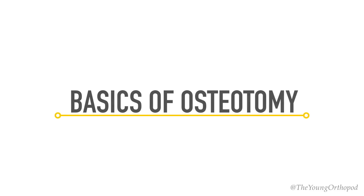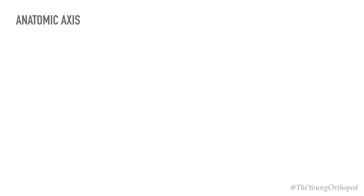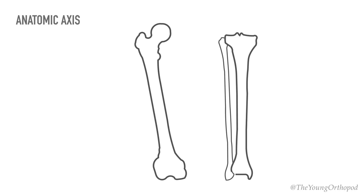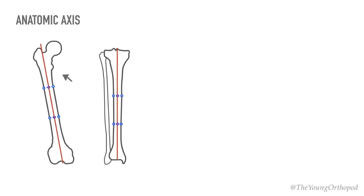Knowledge of the limb axis and its relation to the joints is the foundation for analyzing skeletal deformity. Each long bone has an anatomic and a mechanical axis. The anatomic axis of the long bone is the line that passes through the center of the diaphysis along the length of the bone. In a normal bone, the anatomic axis is a single straight line.